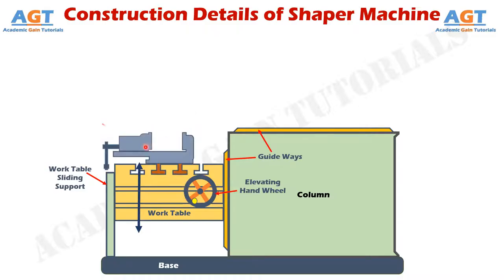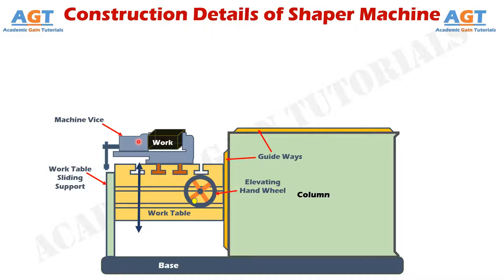Above the table there is a machine vice, or simply a vice. The vice is used to clamp or hold the job firmly between its two jaws so that the job remains in position tightly throughout the shaping operation. It has two jaws — a fixed jaw and a movable jaw. There is a handle provided with the vice, using which we can move the movable jaw front and back, allowing a job of any given size to be fitted firmly within the two jaws.